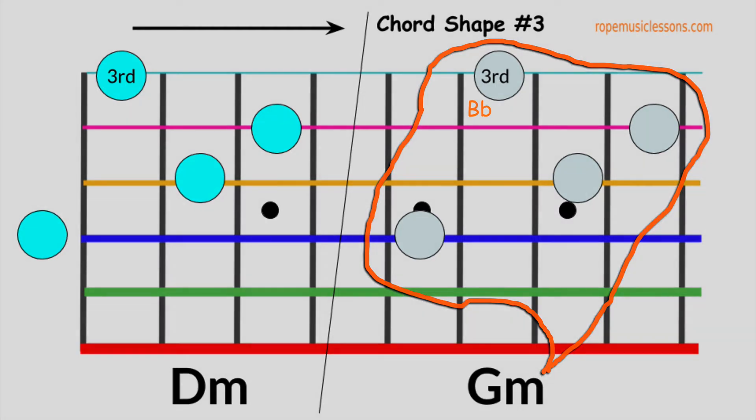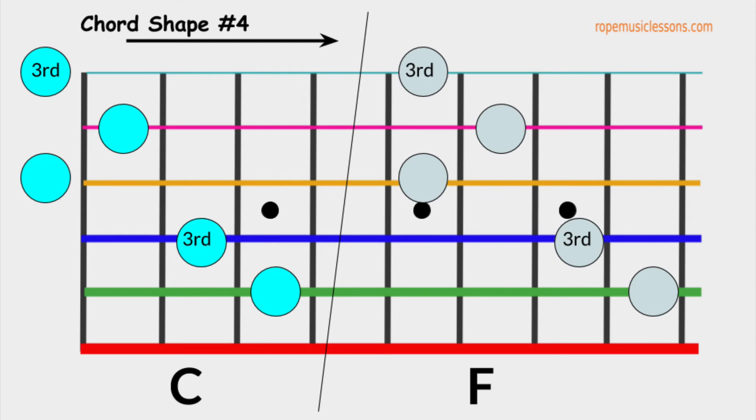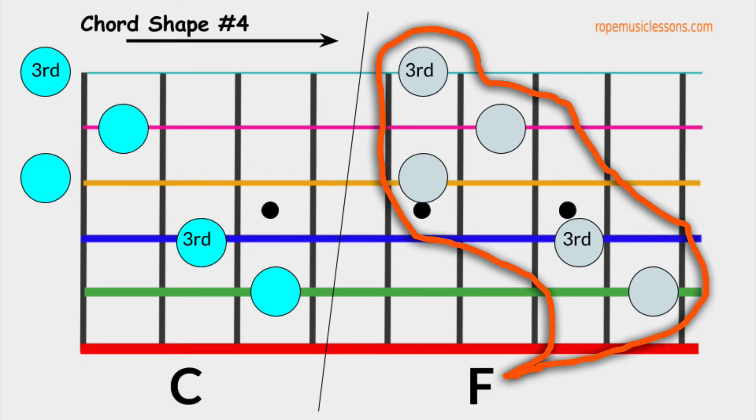Let's move on to chord shape number four. This is a C major. You will notice that there are two third notes with these shapes an octave apart from each other. The third of C is the note E and the third of F is the note A and it's a movable chord. Some of you may not have used this F shape before.